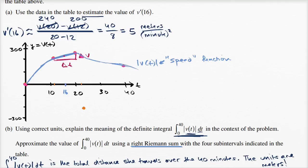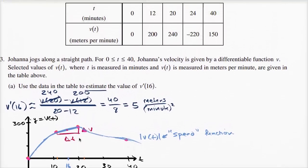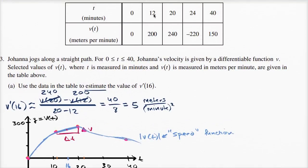Let me divide this into four rectangles using the four intervals from the table. The first interval goes from zero to t equals 12; the next from 12 to 20; the next from 20 to 24; and the last from 24 to 40. If the notion of a Riemann sum is foreign to you, I encourage you to watch the Khan Academy videos on Riemann sums.